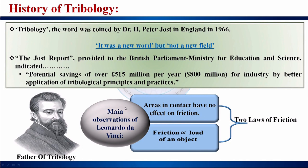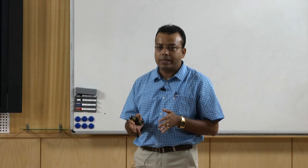Leonardo da Vinci, the famous painter, was simultaneously a very good scientist. He gave the first two laws of friction, which are very important and related to tribology — that is why he is called the father of tribology. The first law states that areas in contact have no effect on friction, and the second states that friction is directly proportional to the load of an object.